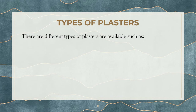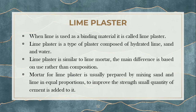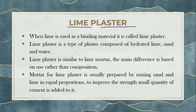Coming to the types of plasters — what are the various kinds of plasters available? We have lime plaster, cement plaster, mud plaster, stucco plaster, and lathe plaster. We will see these five kinds of plaster one by one in detail. The first one is lime plaster. The name itself specifies it — lime plaster is made up of lime as a binding material. This plaster is a combination of lime as the binding material, fine aggregate, and water.